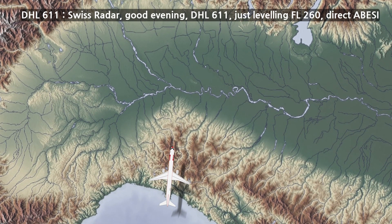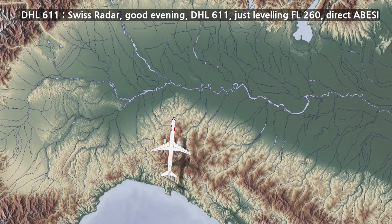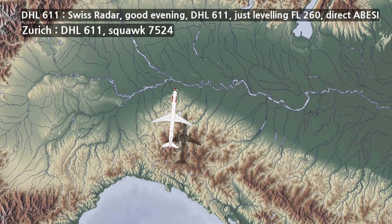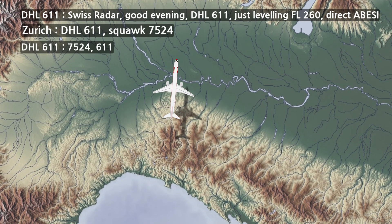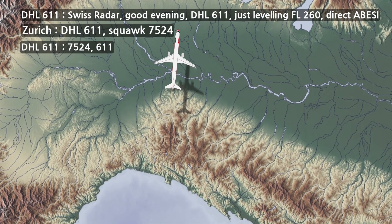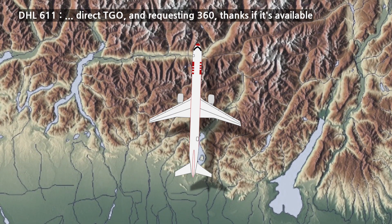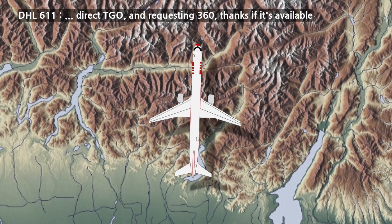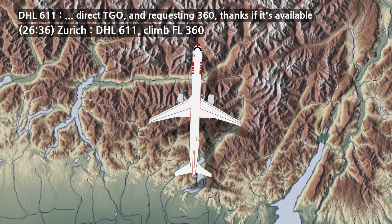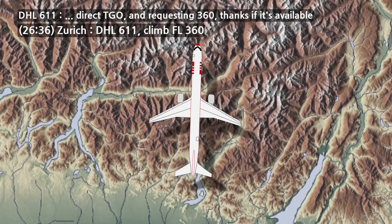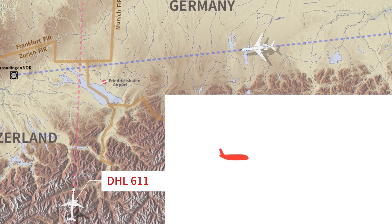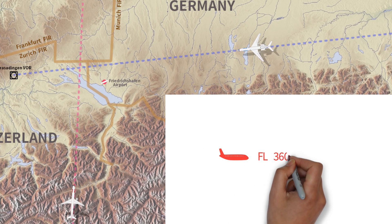DHL-611 contacted Zurich ACC on frequency 128.05, and the altitude at that time was flight level 260. DHL-611 asked the controller to climb to flight level 360. The controller approved this. DHL-611 has reached flight level 360.